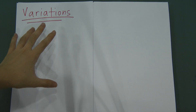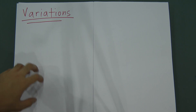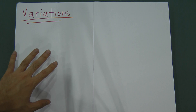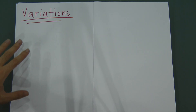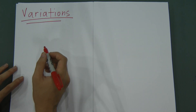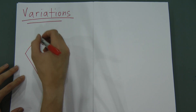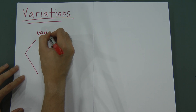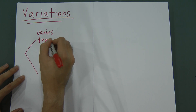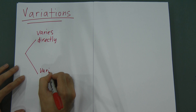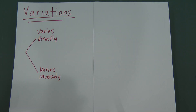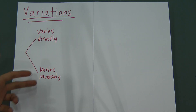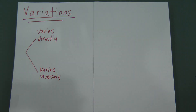I'll explain variation. This is the modern math chapter for Form 5. This is a very easy chapter and it only comes out in SPM Paper 1. I'll do a quick revision. For variation, you only have two parts: the first part we call varies directly, and the second part we call varies inversely.